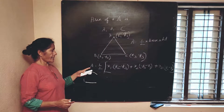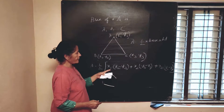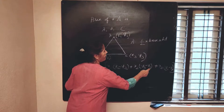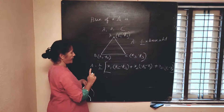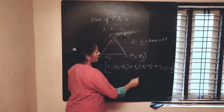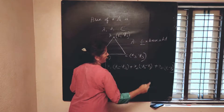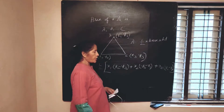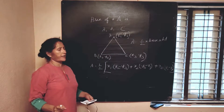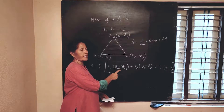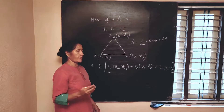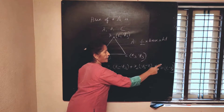Area of triangle A is equal to half into x1, x2, x3 — following the cyclic order 1,2,3 then 2,3,1 then 3,1,2. Whatever is in the bracket: y2 minus y3 after x1, y3 minus y1 after x2, y1 minus y2 after x3. So to conclude: area of the triangle with 3 vertices (x1,y1), (x2,y2), (x3,y3) is half into [x1(y2−y3) + x2(y3−y1) + x3(y1−y2)].